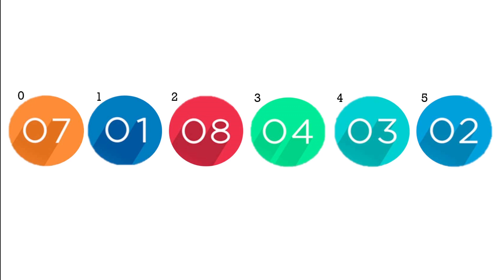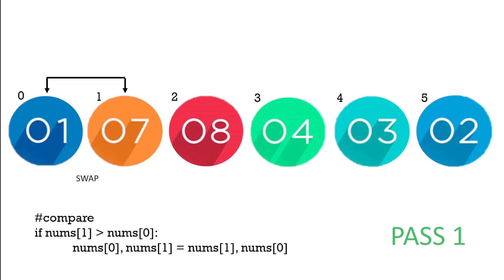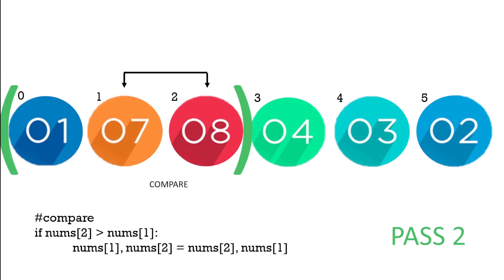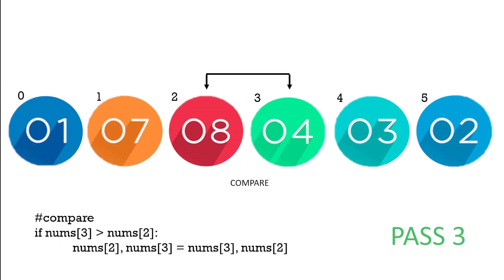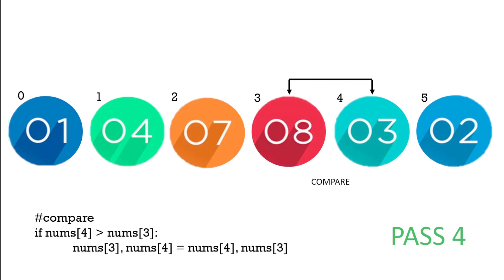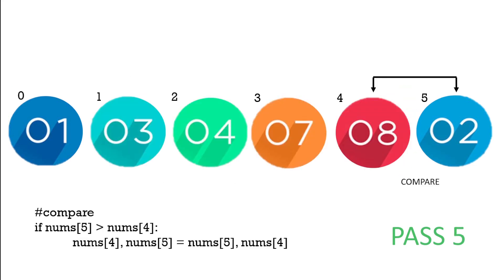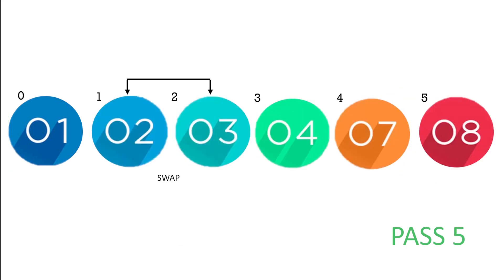The insertion sort looks at each element and makes sure that the elements up to the new one are all in order. In this example we have six numbers. We go through the list and check they're in order. When we have a number that's not lower than the number previous to it, we move it forward, so the lower numbers move towards the beginning until the list is in order.